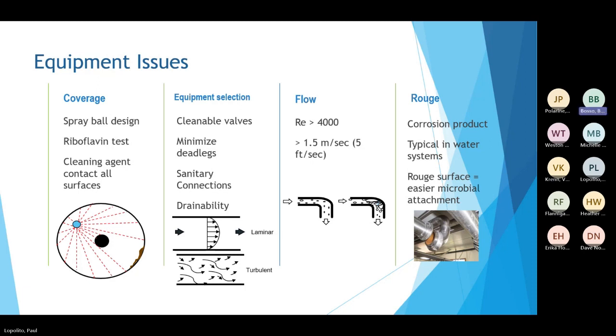Turbulent flow also prevents air pockets from forming in the piping. If air pockets are present, that means that the surface of the equipment is not being covered and it could provide additional areas for microbial growth. Another issue that needs to be considered is rouging of the equipment. Rouging is a corrosive product and is typically seen in water systems. With a rouged surface, it's easier for microbial attachment. Diana will discuss some case studies with rouging later in this presentation.